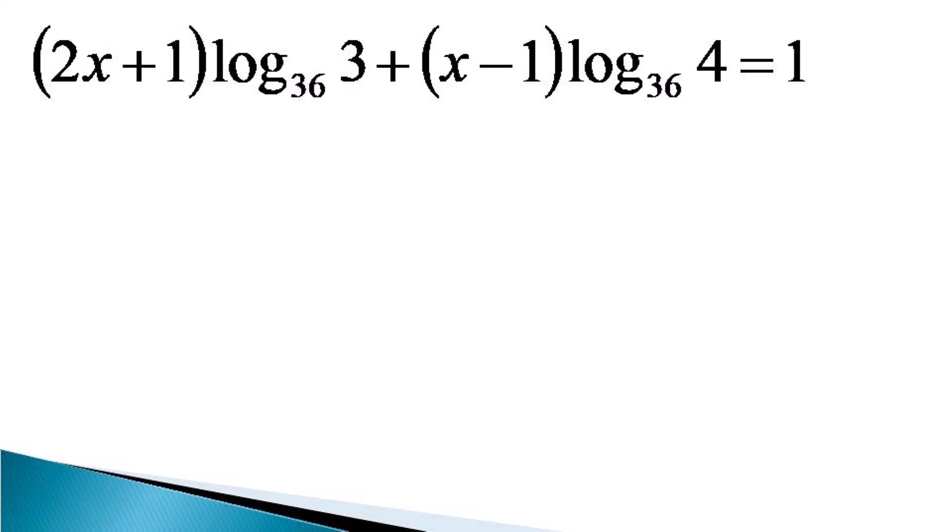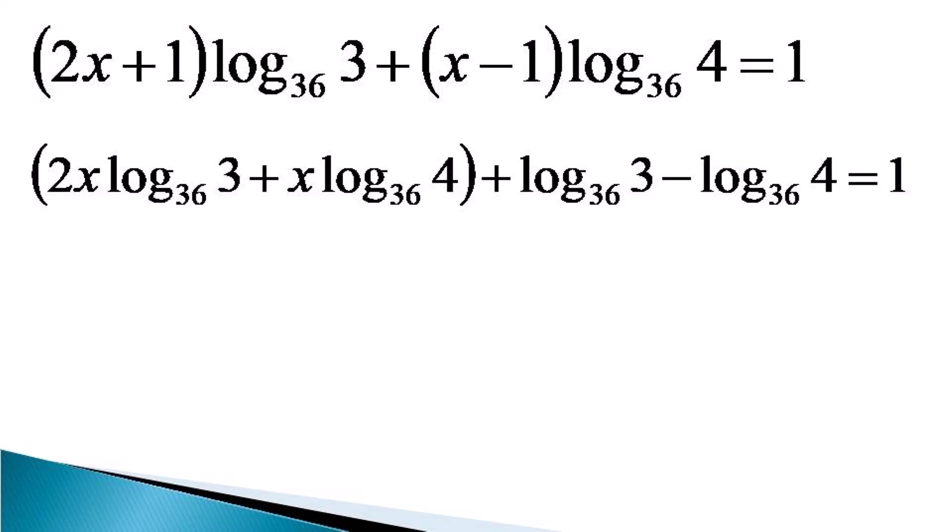Now we gather the terms containing x separately and the terms with constant values separately. So we get that equation transformed as 2x log 3 to the base 36, plus x log 4 to the base 36, plus log 3 minus log 4 equals 1.